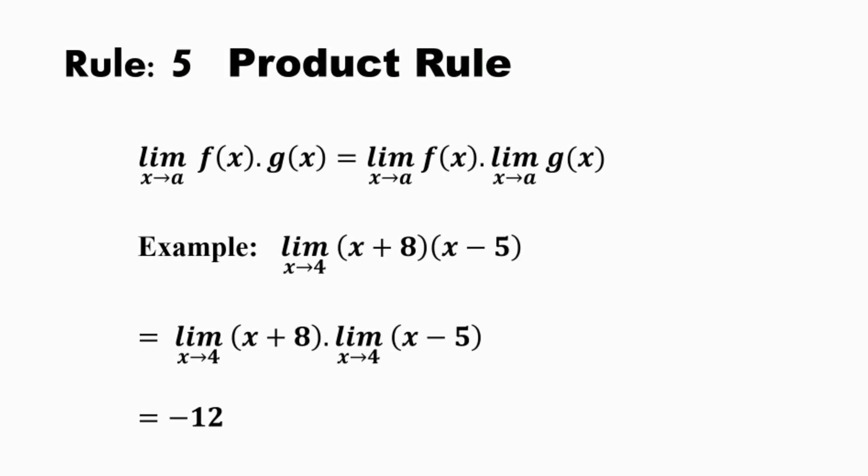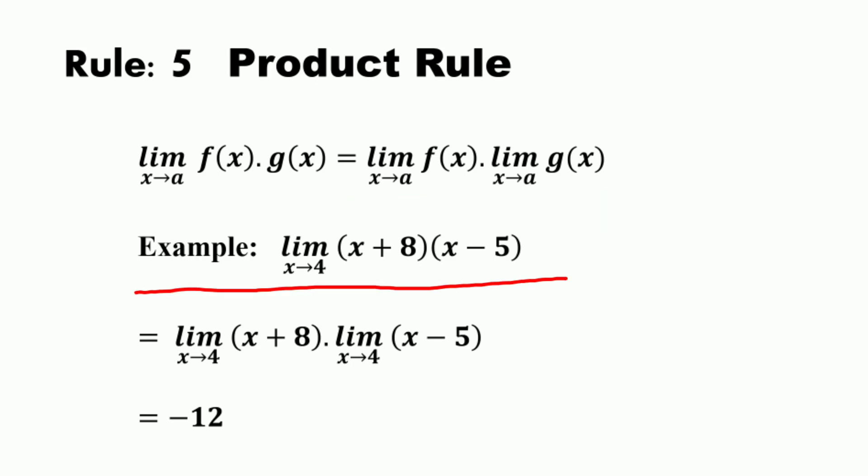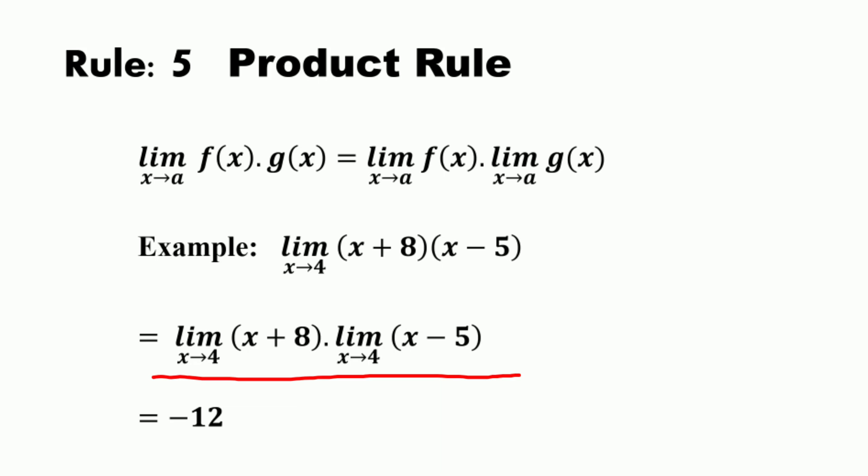The next rule is the product rule. The limit of f(x)·g(x) as x approaches a is equal to the limit of f(x) as x approaches a, times the limit of g(x) as x approaches a. The limit of a product of two functions is the product of their limits — just take the limit of the pieces and put them back together. For example, the limit of (x+8)(x−5) as x approaches 4: substituting x=4 gives −12.